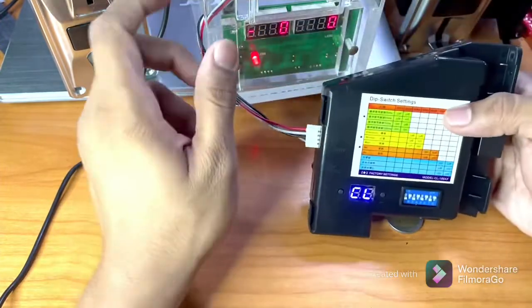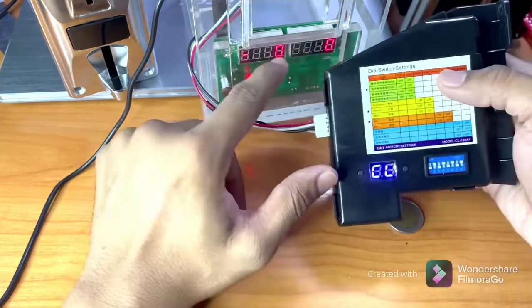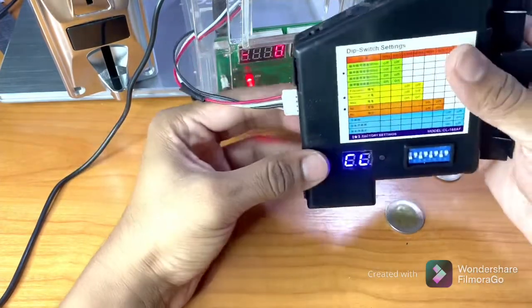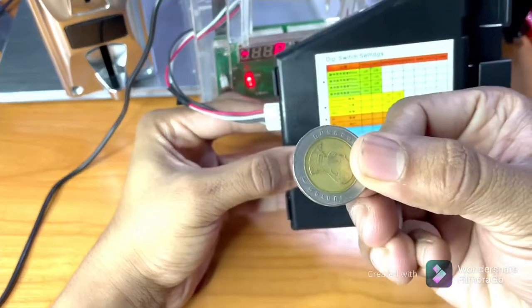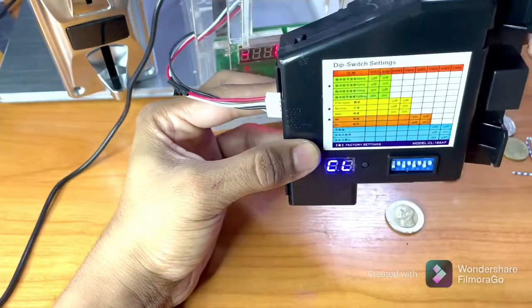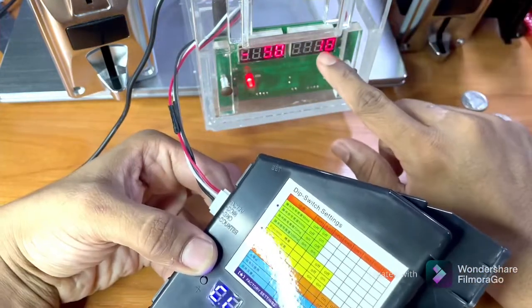Now we will test if it works or not. As you can see on the screen, when I insert the coin it will show output here. So first I will try the ten bath coin. Insert 10 bath coin.